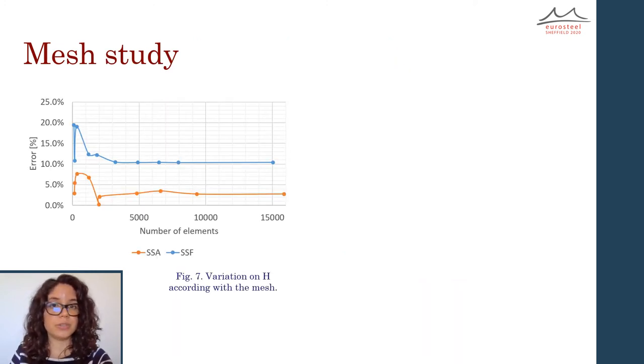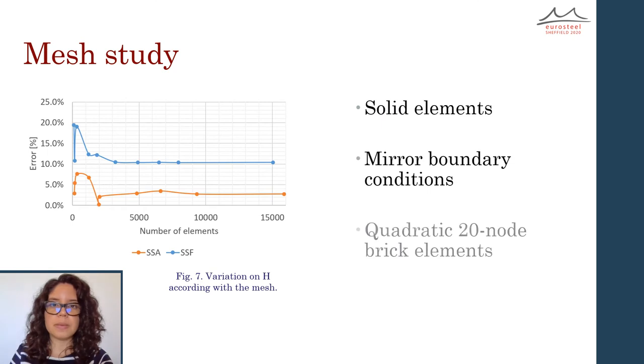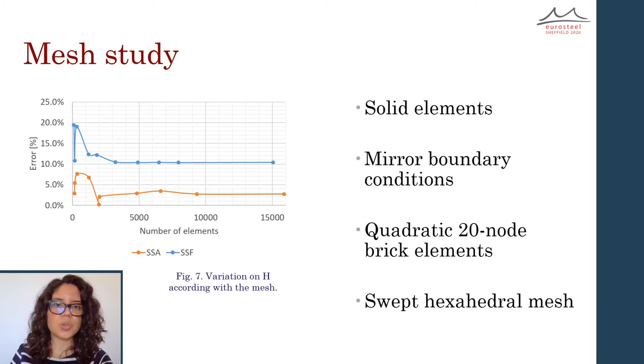Once the materials were defined, a mesh sensibility study was used to calibrate the model. Solid elements, mirror boundary conditions, quadratic 20-node brick elements, and a swept hexahedral mesh were selected for this exercise. The study was successfully verified by reproducing the experimental results previously obtained by other researchers.